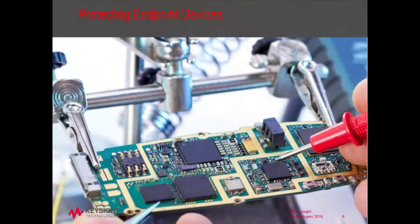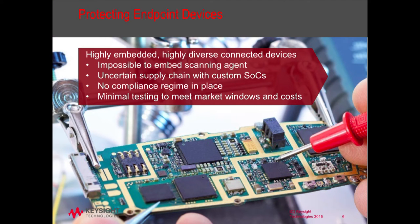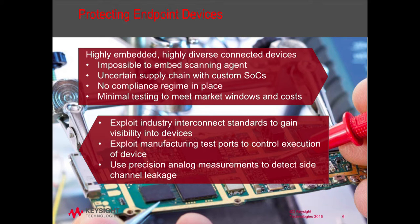To protect endpoint devices, there are a number of ways into embedded devices. You can't embed a scanning agent on them. It's impossible to fully understand the supply chain for custom systems-on-a-chip, which are designed for very short production runs at very high volumes — so you don't actually know who manufactured them at any given time. There's no compliance regime in place and very often minimal testing for market windows. What we're trying to do is exploit industry interconnect standards to gain visibility into the device, using standard communication protocols, manufacturing test ports, and precision analog measurements to detect side channel leakage.